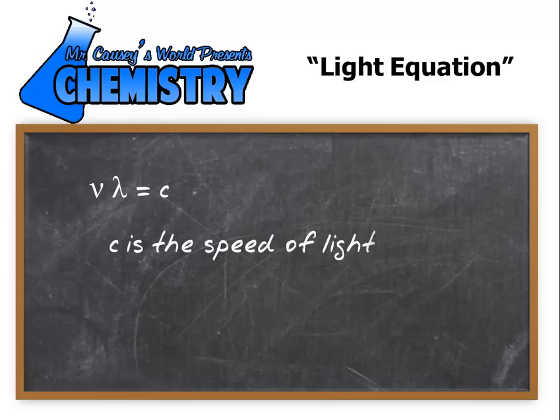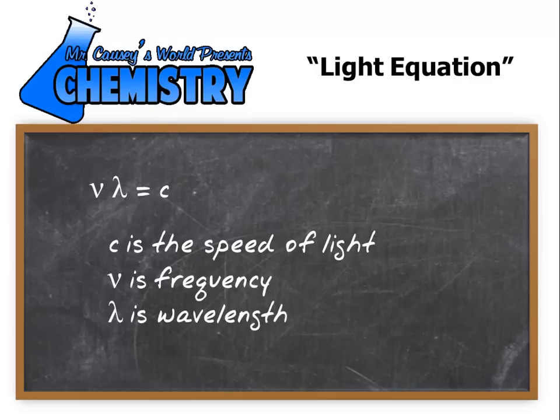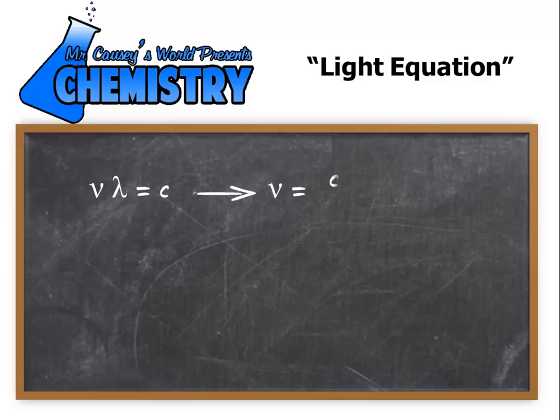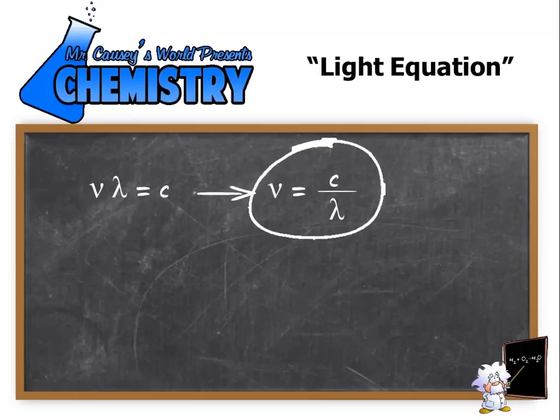So let's do a little algebra. Now remember that c is the speed of light and nu is frequency and lambda is wavelength. And with a little algebra we can change that into a nice little equation. Frequency equals the speed of light divided by wavelength.